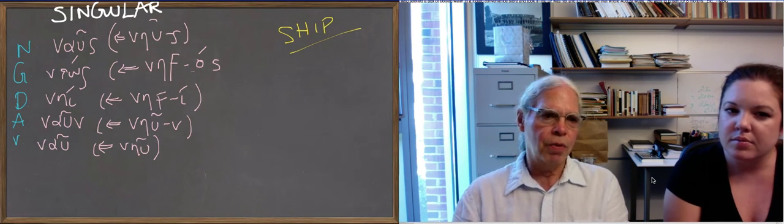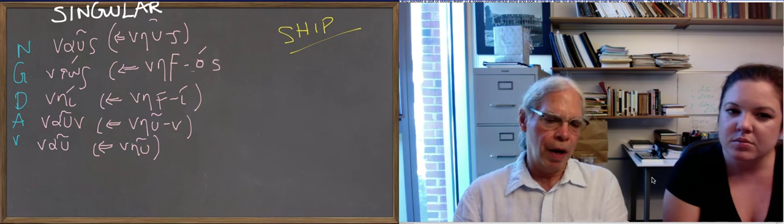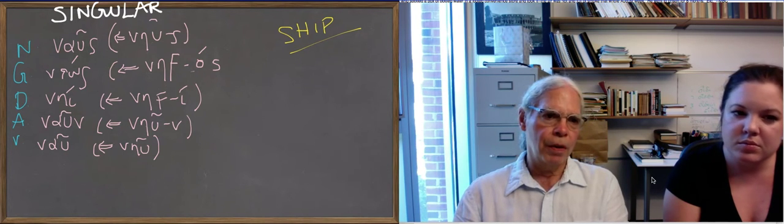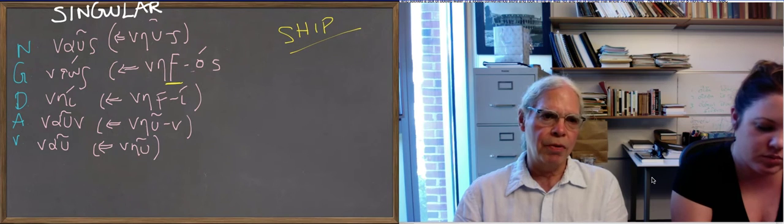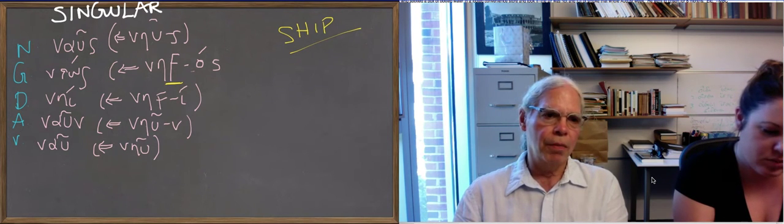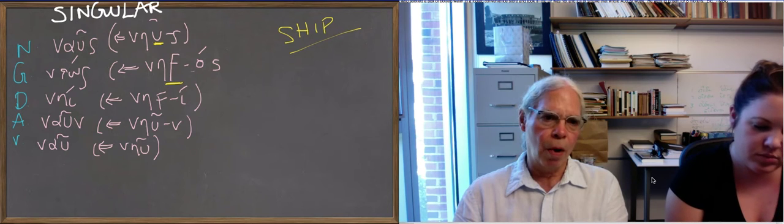So in any case, what happens with this word is, when the ending begins with a vowel, you have the digamma, the w. When the ending begins with a consonant, for example, the nominative is an s, you get a u, so ναῦς, nominative singular, but νηός, genitive singular.